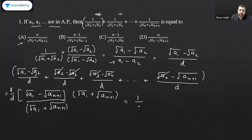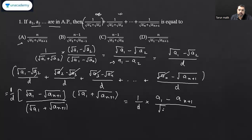Again applying (a − b)(a + b) = a² − b², the square roots cancel. So the expression becomes (1/d) × (a₁ − a_{n+1}) in the numerator, divided by (√a₁ + √a_{n+1}).